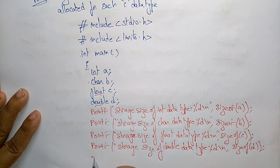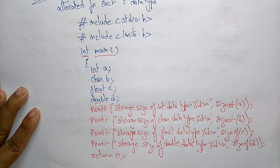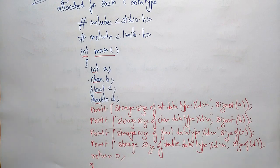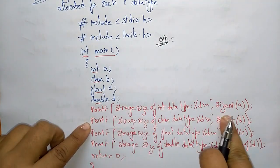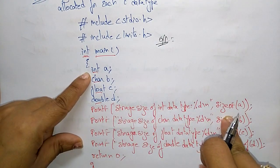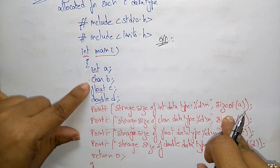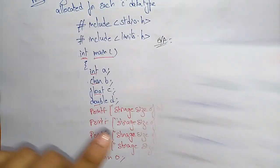And here you have to write return 0 because we used int main — the return type of main is integer, so return 0, then close the main function. So this is the program. Now what will be the output? Here we are printing the size of each data type, that is the memory allocated to each data type, according to the tables previously discussed.